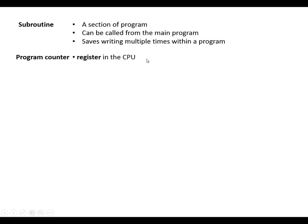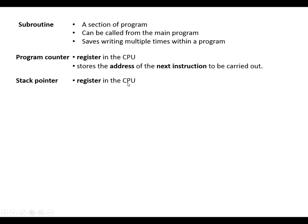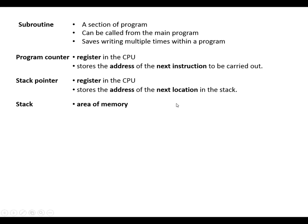The program counter is a register in the CPU and it stores the address of the next instruction that's going to be carried out. The stack pointer is also a register in the CPU and stores the address of the next location in the stack. The stack itself is an area of memory and it's used to store the contents of the program counter during subroutines.